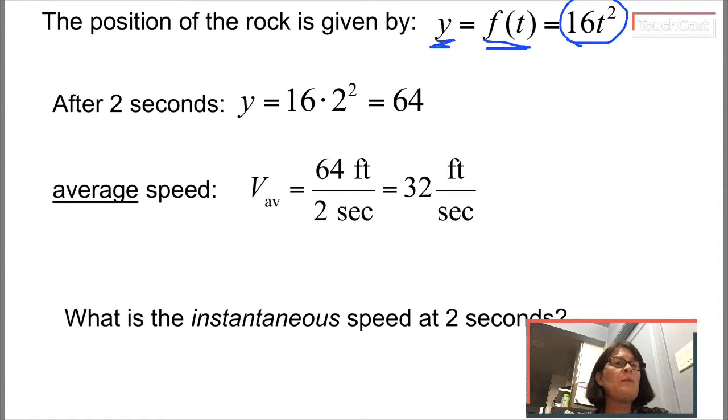So we practiced finding the average speed over the time interval 0 to 2 seconds. We said well what if we really wanted to know the time at exactly 2? We'd want the interval, the time interval, to go down to 0, but then we're going to have a divide by 0 problem.